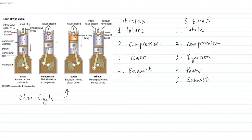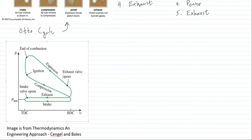So we have four strokes and five events. After understanding that, we will now relate it to the Otto cycle. In the discussion of the Otto cycle, it is important to discuss it in relation to the PV diagram. I have here a PV diagram, and this image is from Thermodynamics and Engineering Approach by Cengel and Boles.